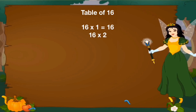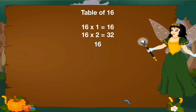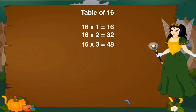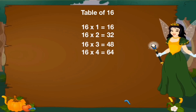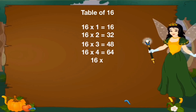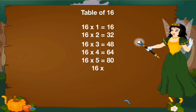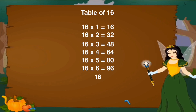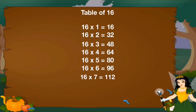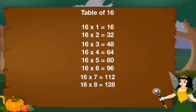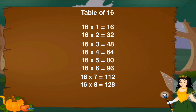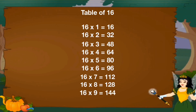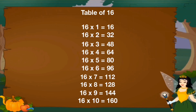Let's revise table of 16. 16 1's are 16, 16 2's are 32, 16 3's are 48, 16 4's are 64, 16 5's are 80, 16 6's are 96, 16 7's are 112, 16 8's are 128, 16 9's are 144, 16 10's are 160.